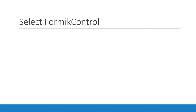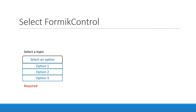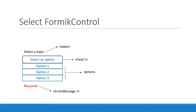In the UI a select Formik control would look like this. There are again three distinct elements: a form label which is nothing but a label HTML element, a form input which is the Field component from Formik which in turn renders a select HTML element, and finally the ErrorMessage component from Formik. The Field on click renders a drop-down with a list of options to choose from, which has to be considered when creating our select component.